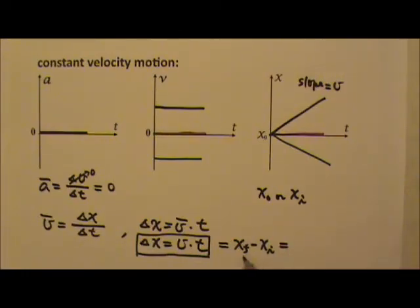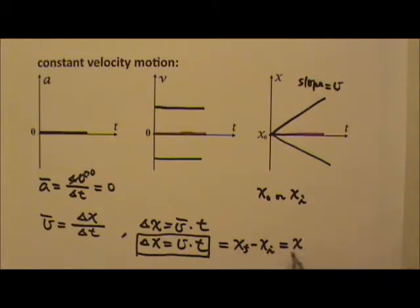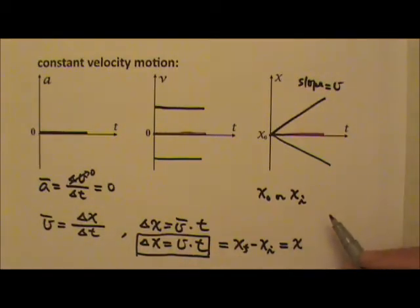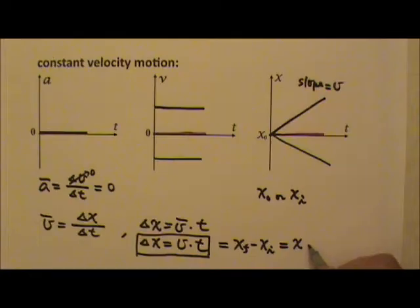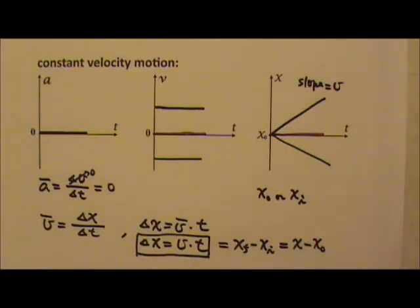A lot of times, instead of writing xf for the final position, books just write x, because the final position doesn't have to be the position at the very end — it can be the position at any moment after the motion starts. And most of the time they also write x₀ for the initial position. So what you may see is: x − x₀ = v·t.